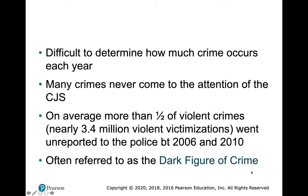It's difficult to determine how much crime occurs each year because many crimes never come to the attention of the criminal justice system. On average, more than half of all violent crimes are unreported to the police. This is often referred to as the dark figure of crime — when looking at police data, we're missing all the crimes the police don't know about.